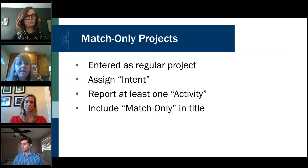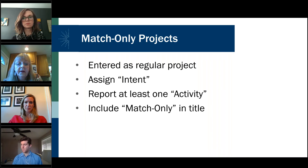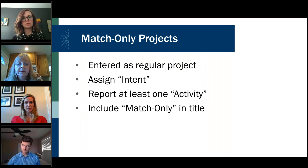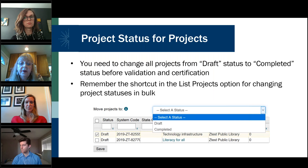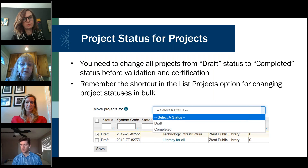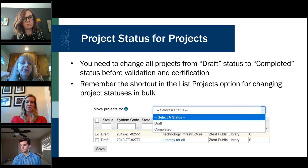A few people have match-only projects. You enter it as a regular project, assign an intent, report at least one activity, and include 'match only' in the title of the project. Regarding project status, the SPR gives you the option to change all your projects at once. When you're ready to validate and certify your report, you can change them all from draft to completed — they have to be in completed status for anything to be validated and certified. You'll see the option on the left-hand side of the screen where it says 'move projects to' with a status box.